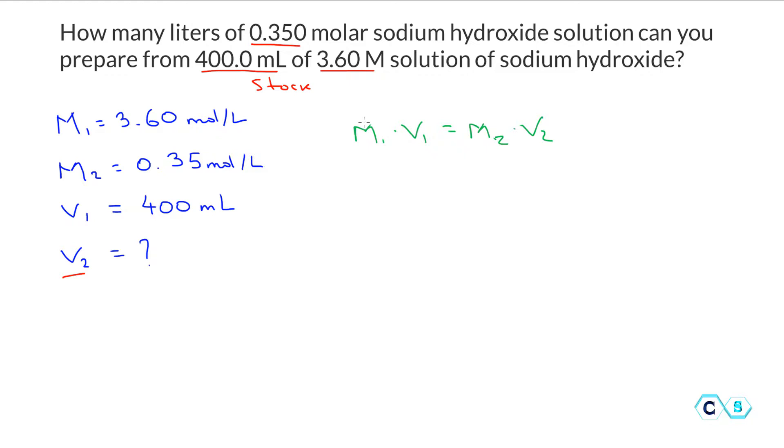Now we know the M₁ which is 3.6 molar, the V₁ we're going to take 400 milliliters of the stock solution, and we're preparing a new solution which is 0.35 molar, so we're trying to find the V₂.